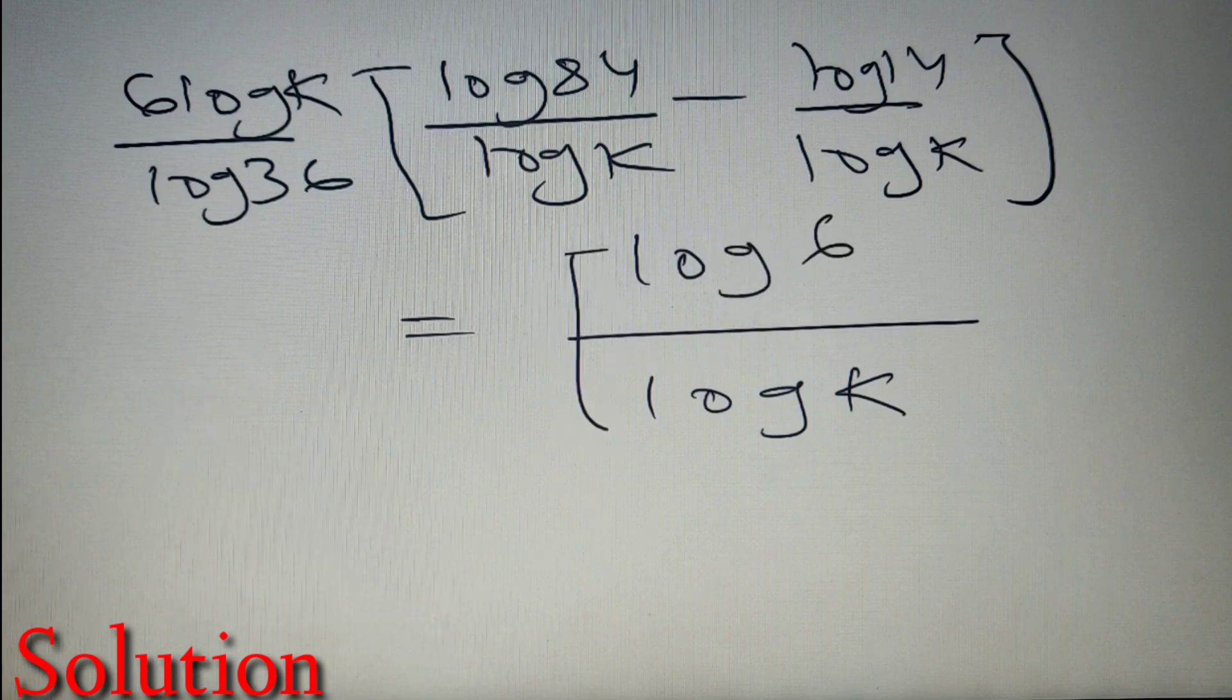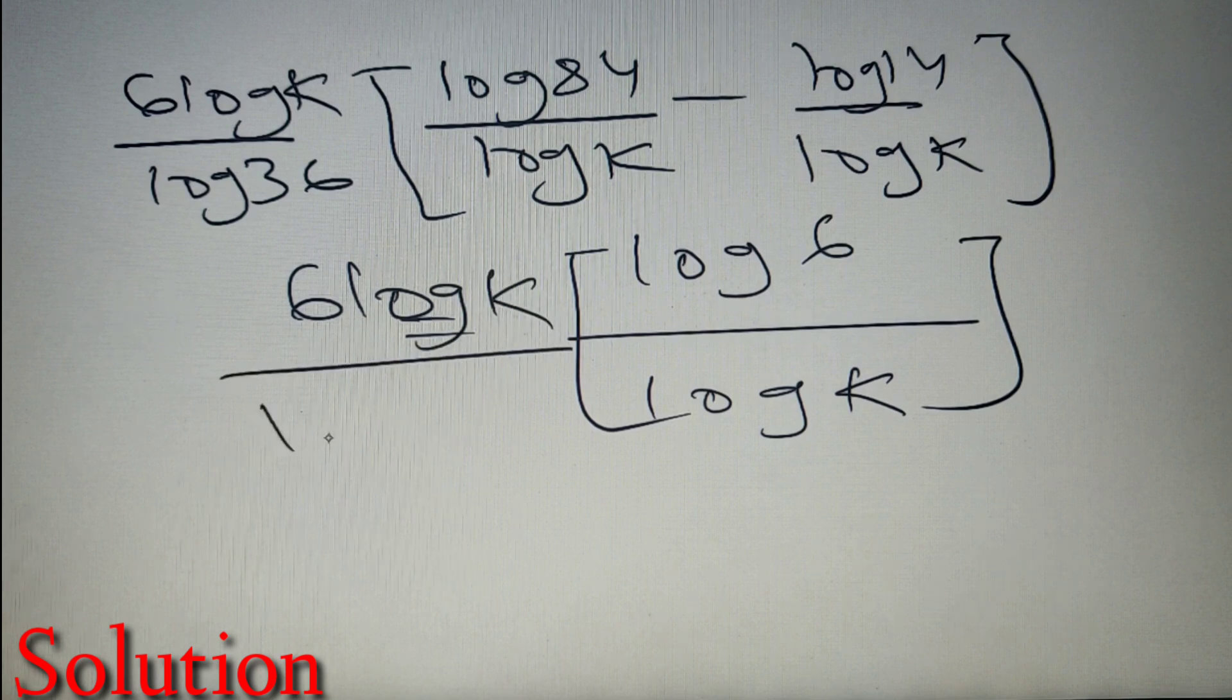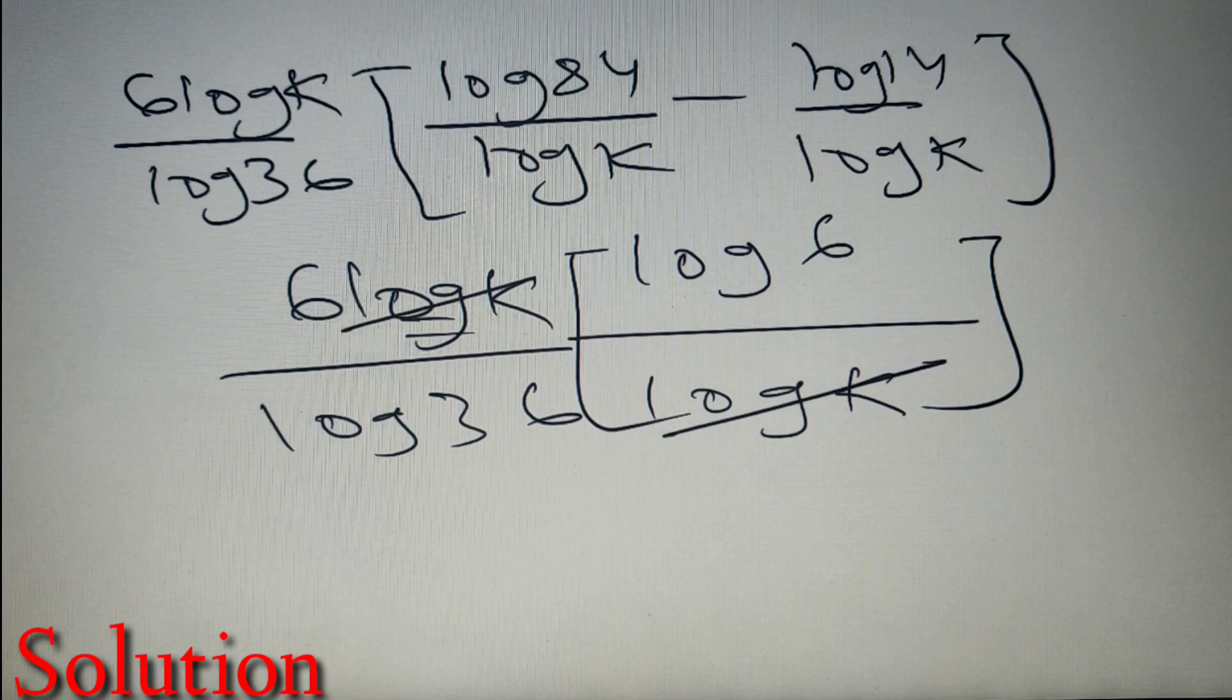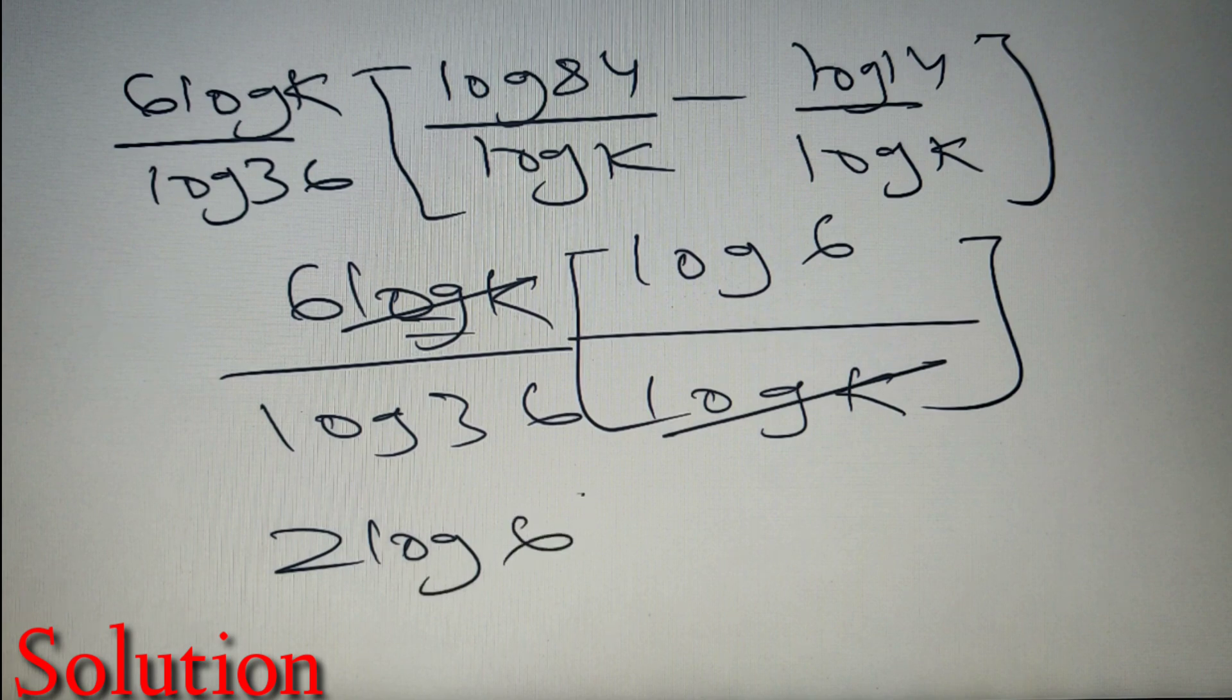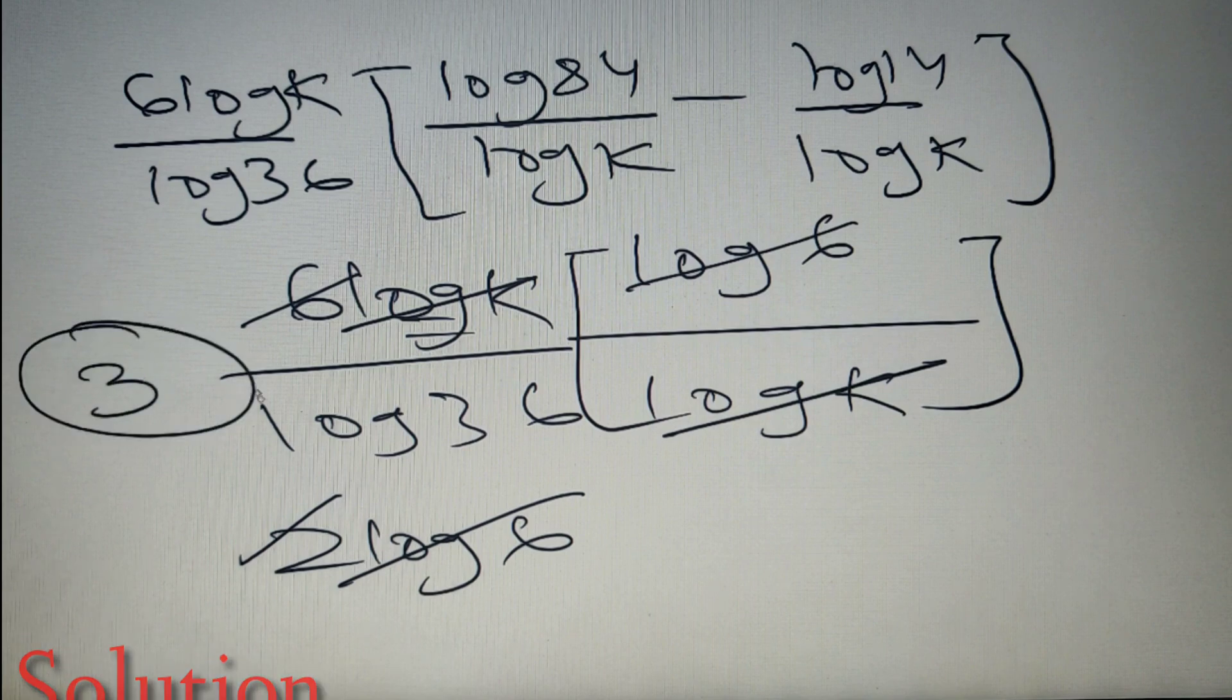So over here we have log 6 by log K, and we also have 6 log K into log 36. Now over here you can see that log K and log K will get cancelled, and log 36 is equivalent to 2 log 6, because log 36 is equal to log 6 square, and log 6 square can be written as 2 log 6. So log 6 log 6 will also get cancelled, and we are left with our final answer as 3.